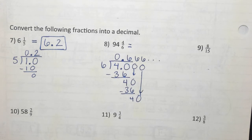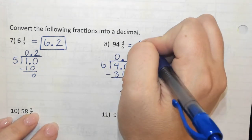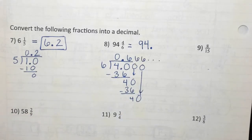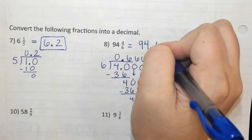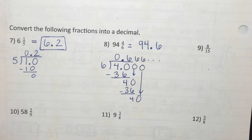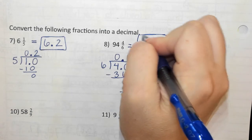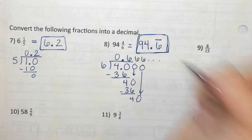Let's go ahead and write our answer. Now that we know it's repeating, what's going to go in front of my decimal? 94. That's in front of my fraction, so I put it in front of my decimal. What am I going to write behind my decimal? Just six — with a line on top. So my answer is 94.6 with that repeating bar on top.